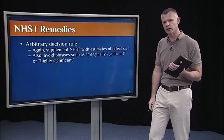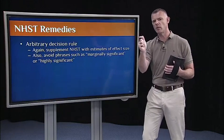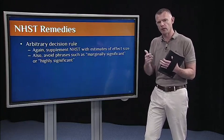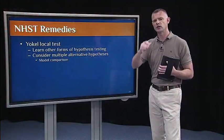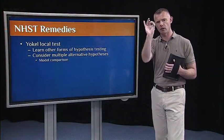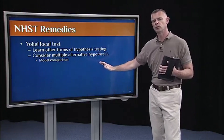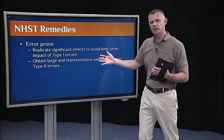Same holds for this arbitrary decision rule. So, yeah, it's arbitrary, but if you're right on the cusp, then don't worry so much about being significant or not significant. Report estimates of effect size. That'll tell people whether you have a large effect or a small effect. With respect to this local test, obviously, go out and learn other forms of hypothesis testing. And second, consider adding in multiple alternative hypotheses. You don't have to have just the null and one alternative. You could have the null, alternative one, alternative two, and so on. And then engage in model comparison, which we'll do next week when we do multiple regression.